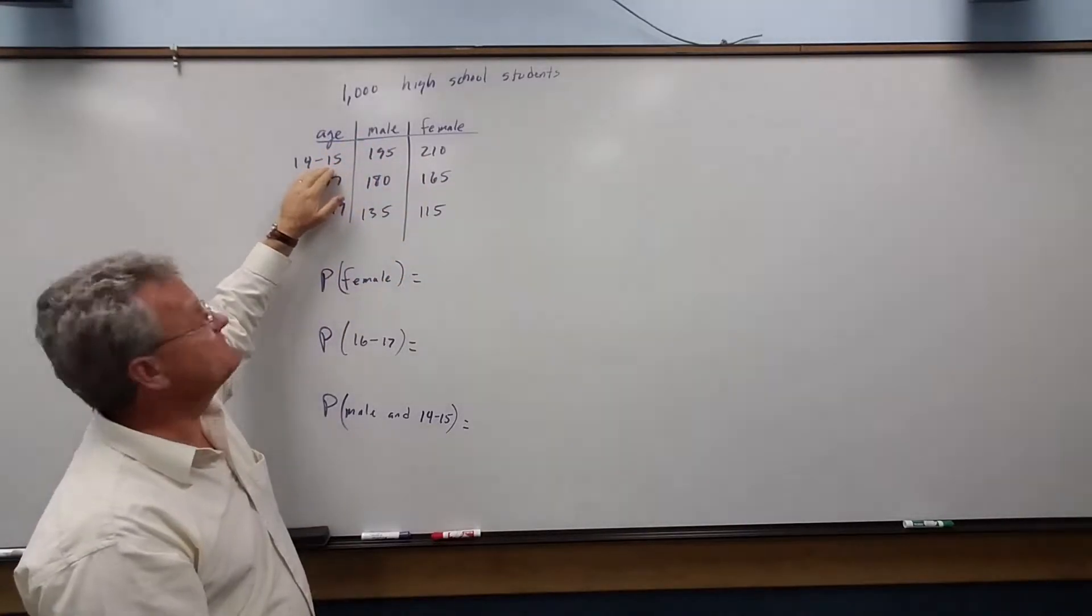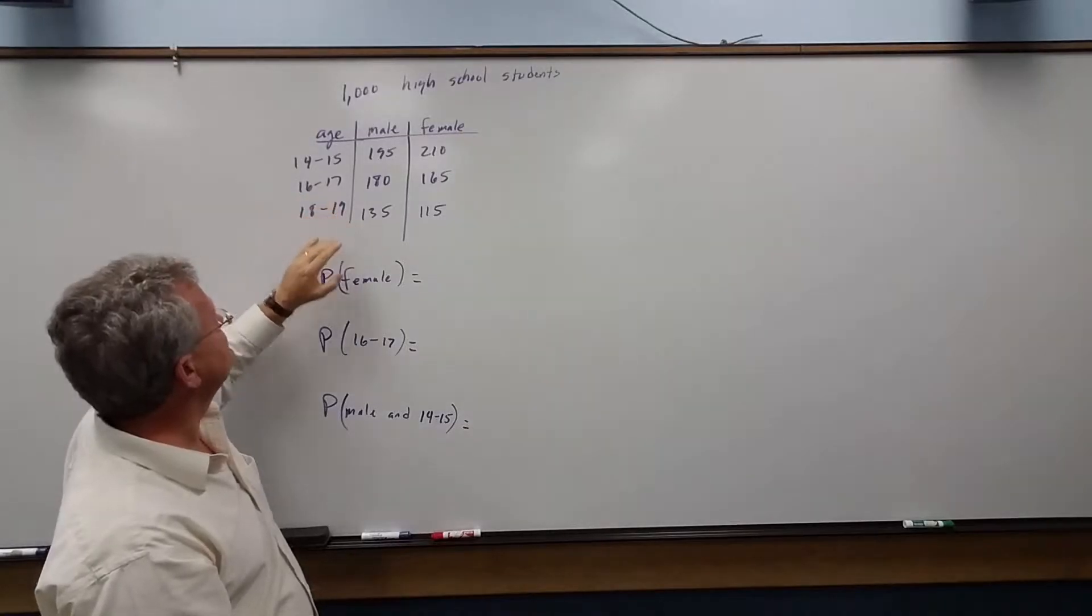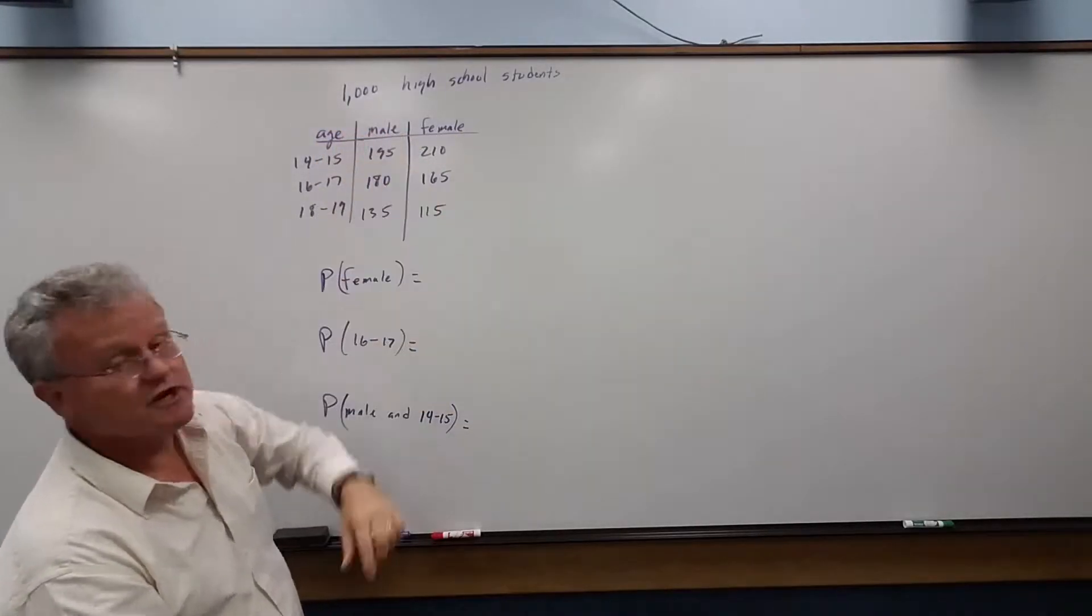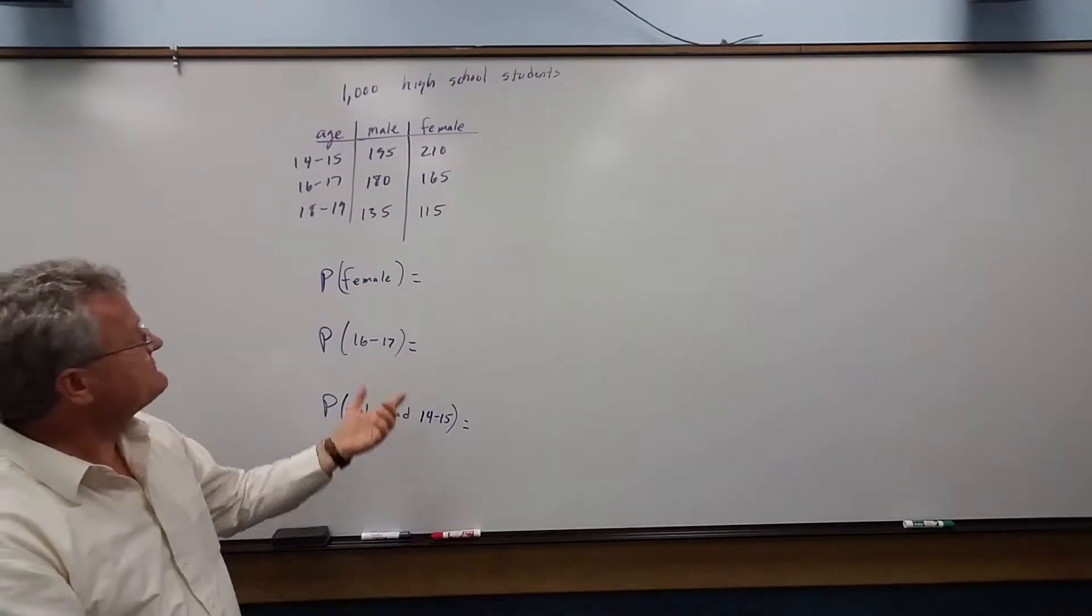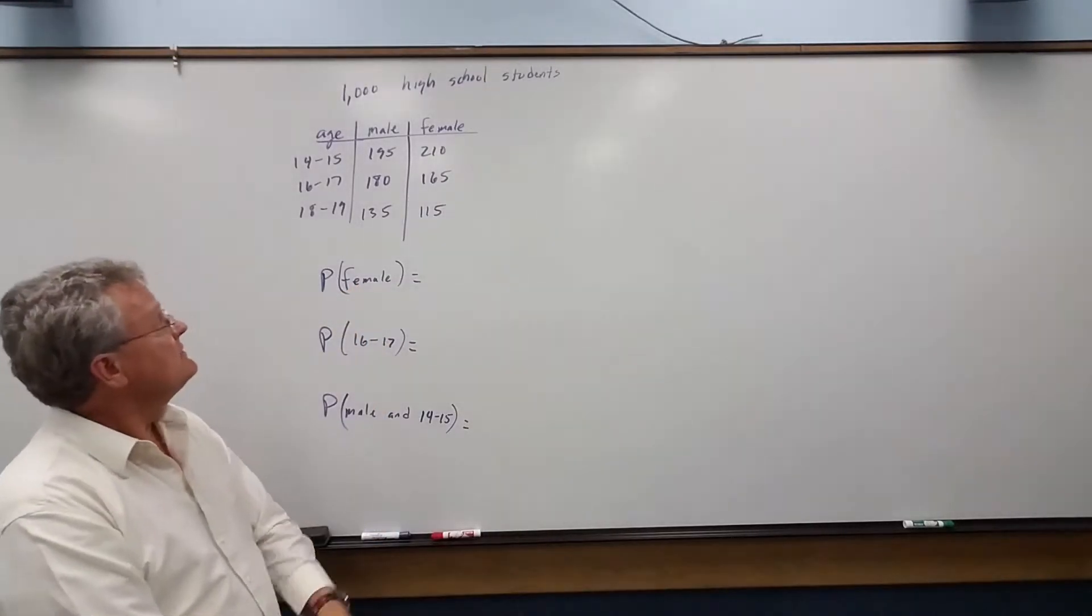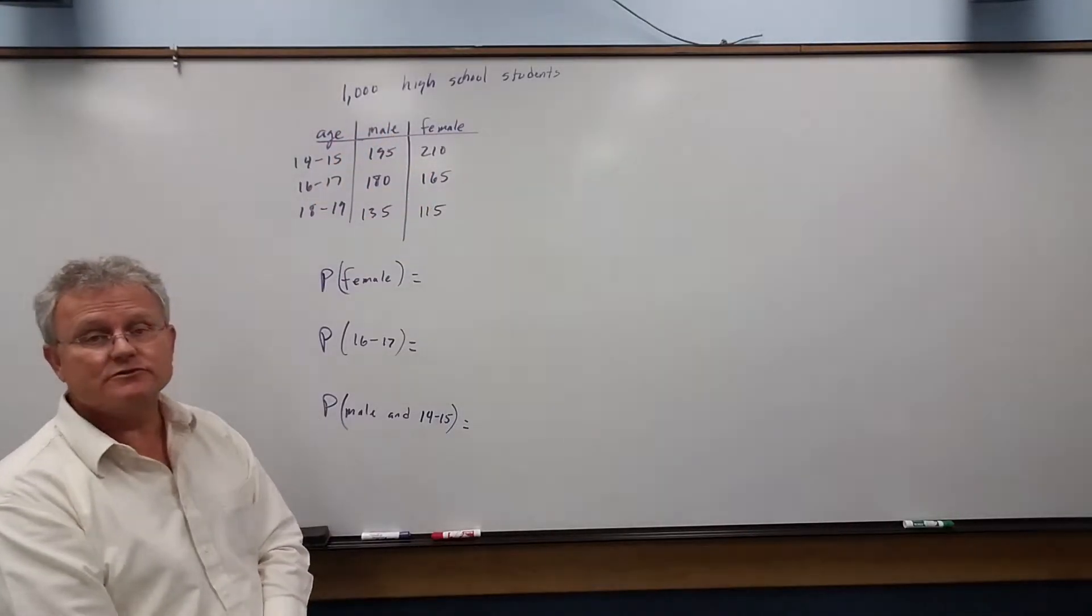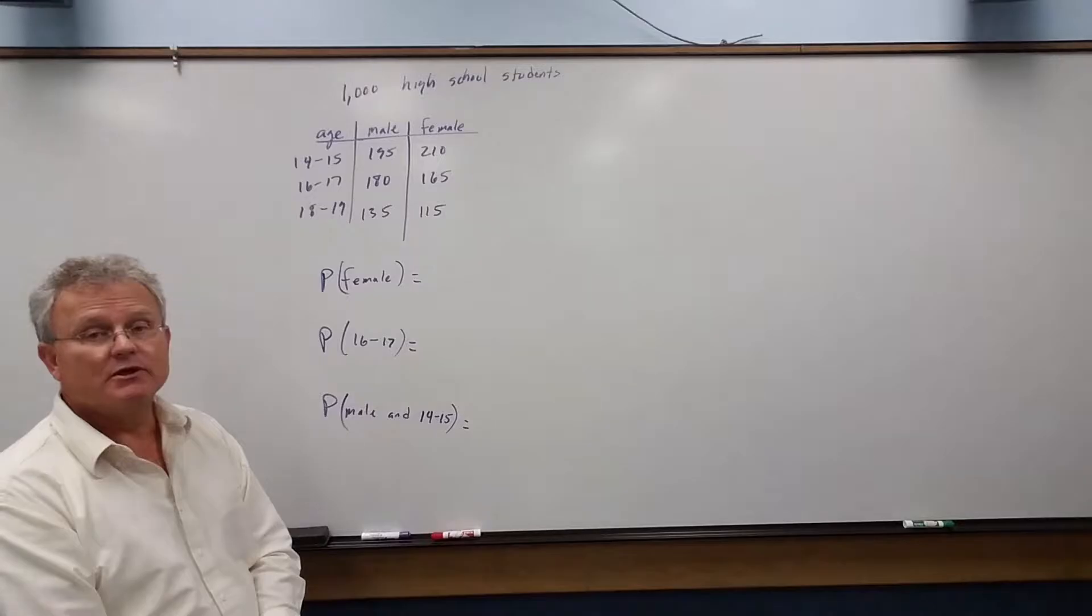The ages are 14 to 15, 16, 17, 18, and 19, and here's the number. Again, we're told these numbers add up to 1,000. So let's find the probability: if we randomly pick one person from these 1,000 students, what's the probability they're female?